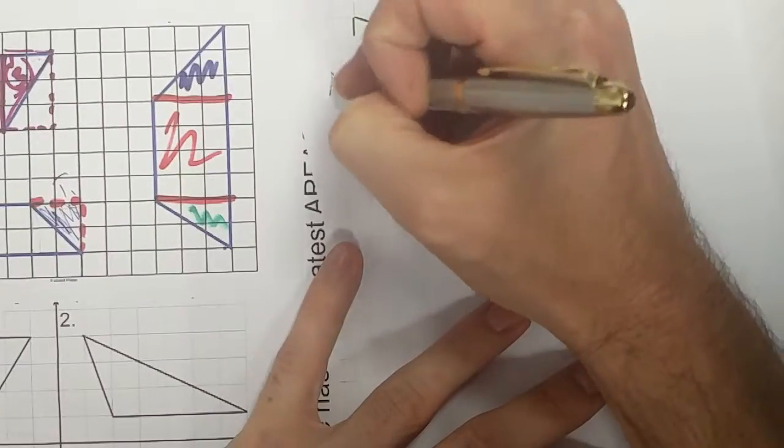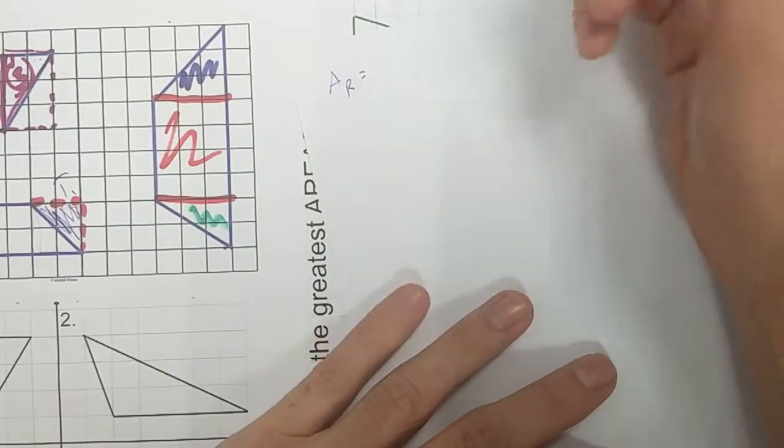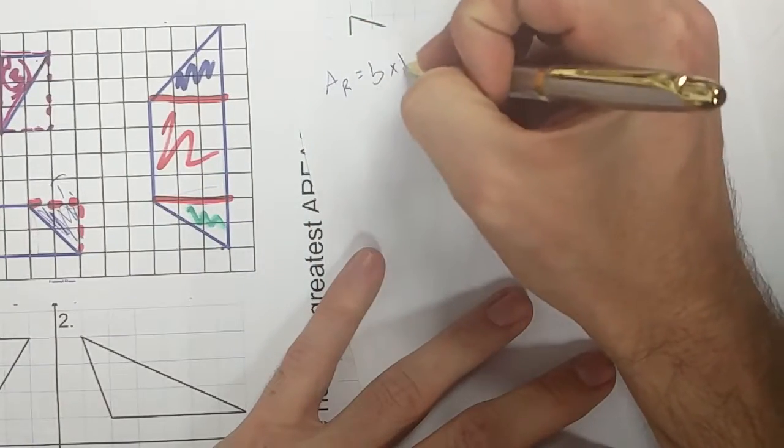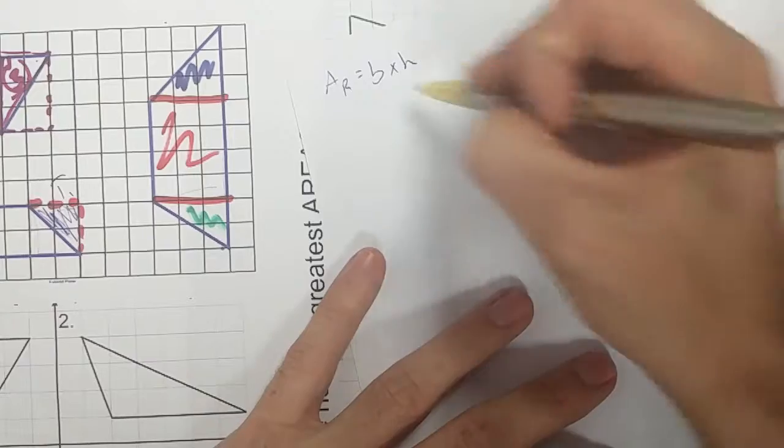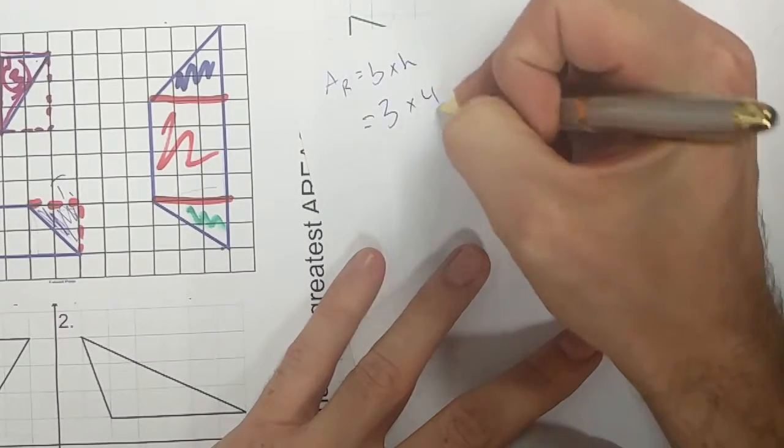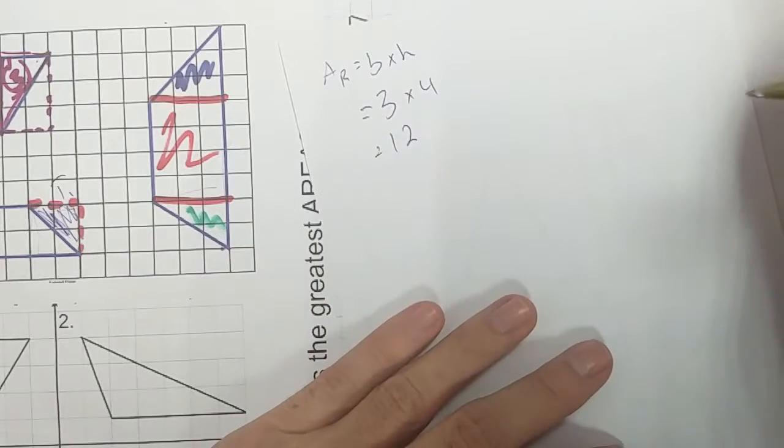So I'm going to start with my rectangle. I'm going to call this area one. Let's say area R because it's area red. Area of the red thing is three by four. So I know it's base times height, which is the same as length times width. And the area of this rectangle is, I'm going to say three by four. So it's a total of 12.